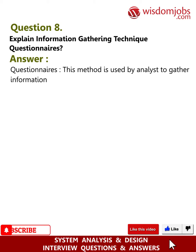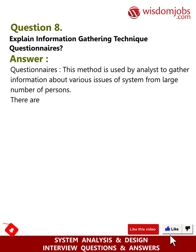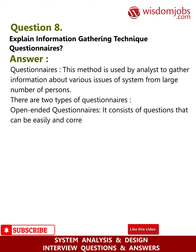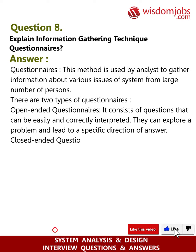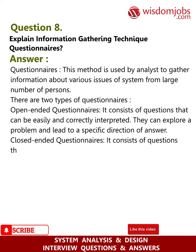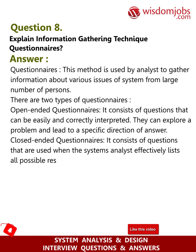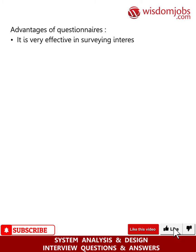Question 8: Explain the information gathering technique of questionnaires. Answer: This method is used by analysts to gather information about various issues of a system from a large number of persons. There are two types: open-ended questionnaires, which consist of questions that can be easily and correctly interpreted and can explore a problem leading to a specific direction of answer; and closed-ended questionnaires, which consist of questions used when the analyst effectively lists all possible responses, which are mutually exclusive.